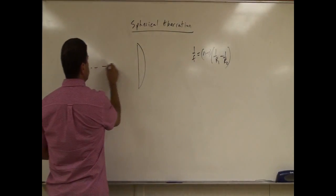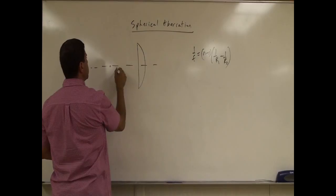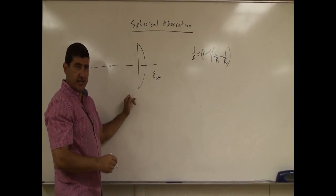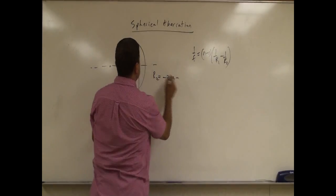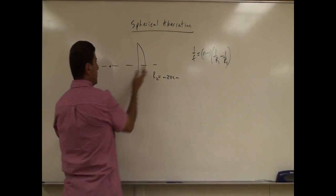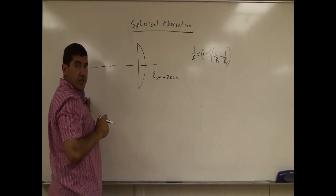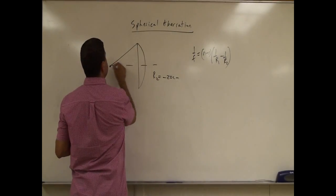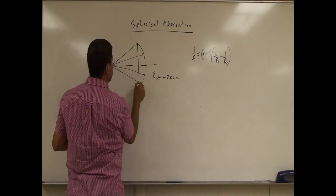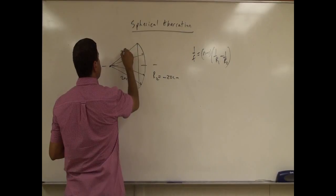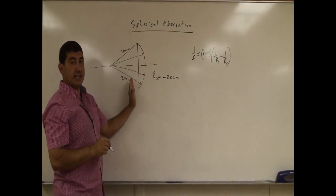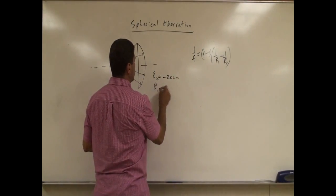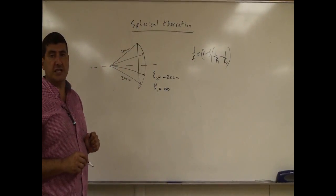Let's assume the lens has a radius of curvature of 20 centimeters. So r2 will be the radius of curvature of this side of the lens, and it's going to be negative 20 centimeters — negative because it faces the virtual side. The left side of the lens has an infinite radius because it's plano-convex, so r1 is going to be infinity.